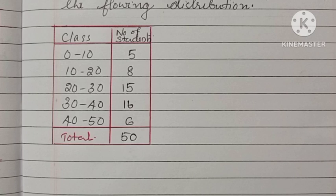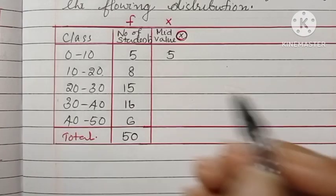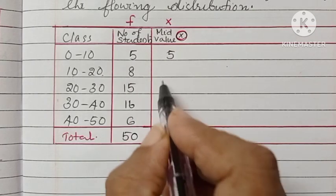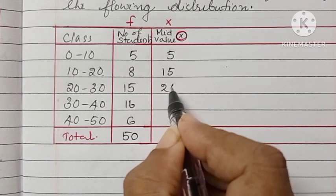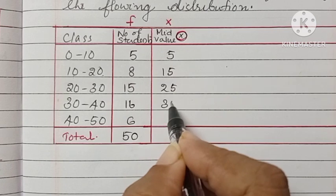Total number of frequency is 50. We have to find the mid-value x from the class. For 10 to 20, the mid-value is 15, then 25, 35, and 45.